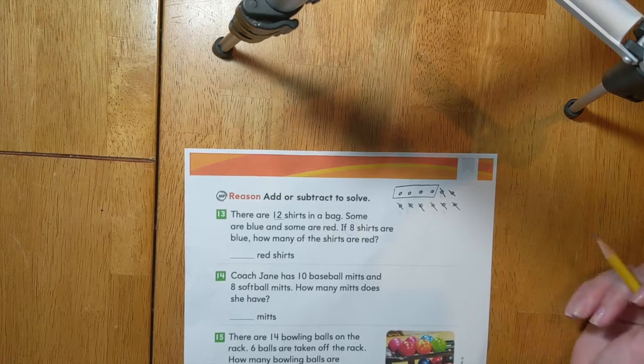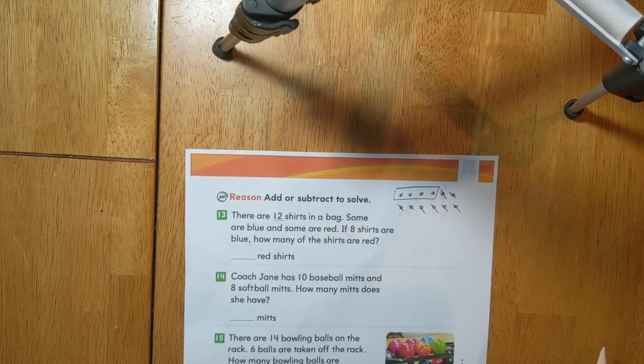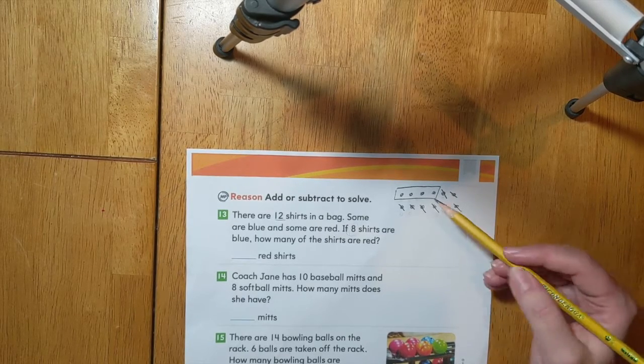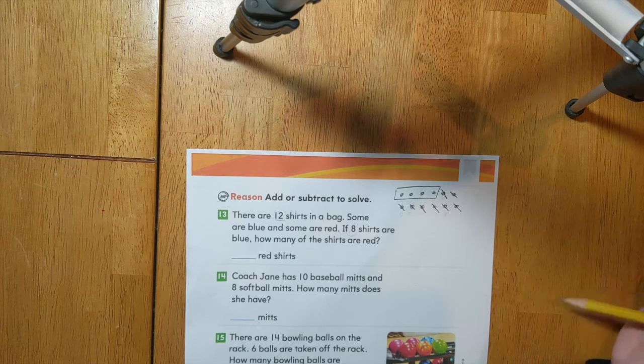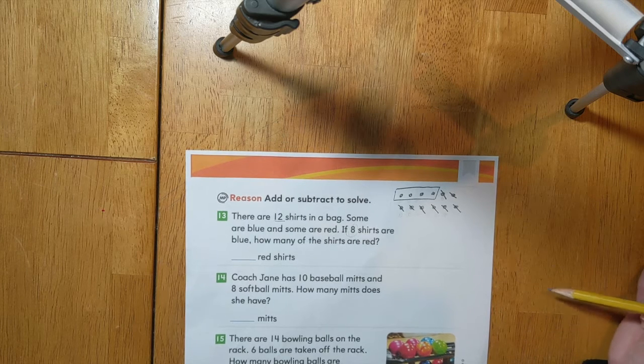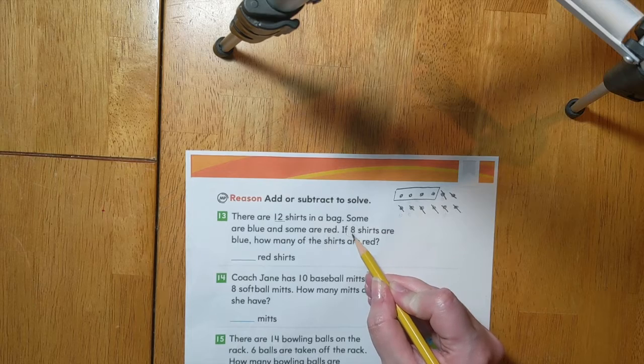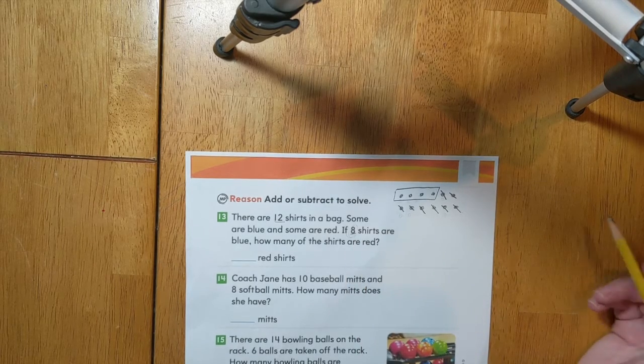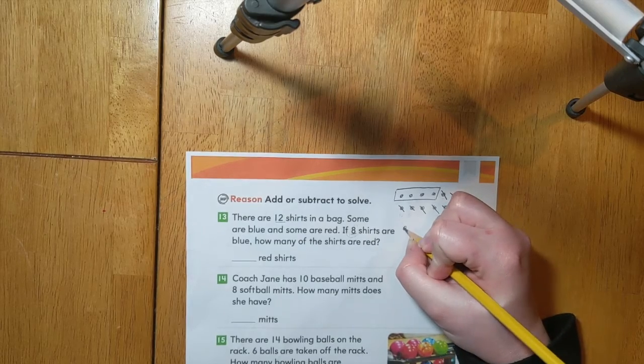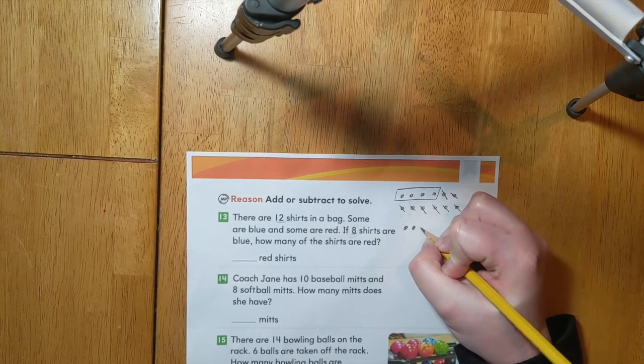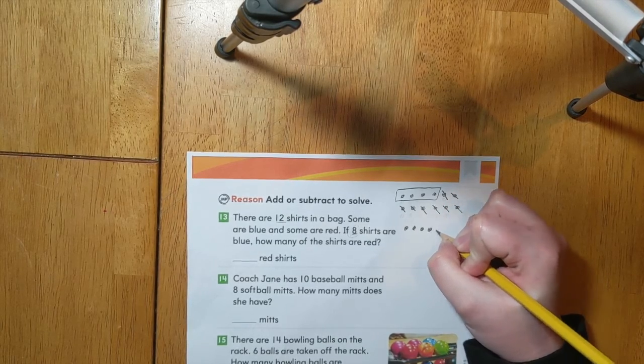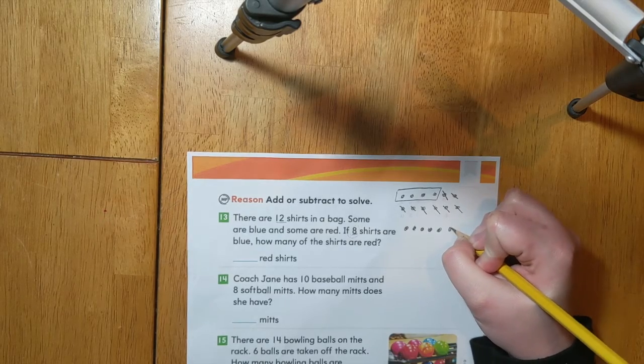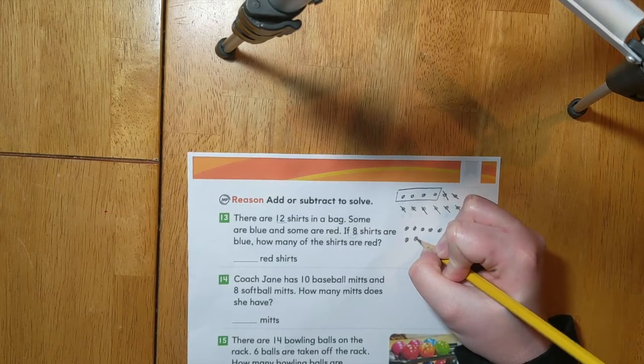Another way to solve this problem is through addition. We can count on to see how many shirts are red. For this we'll start by drawing 8 circles since we know that 8 of them are blue. 1, 2, 3, 4, 5, 6, 7, 8.